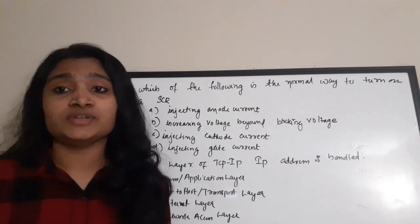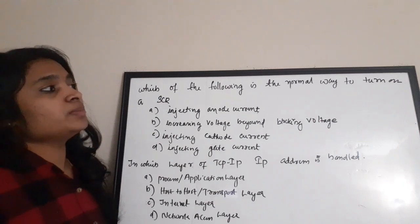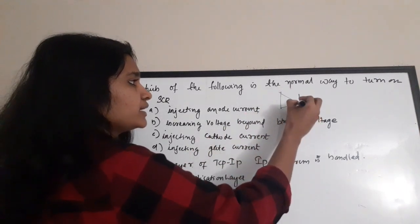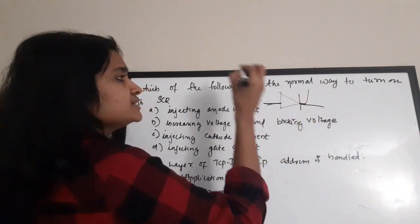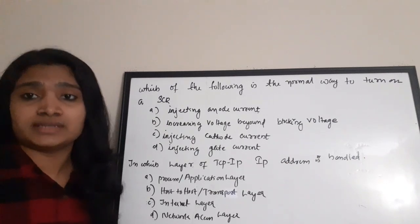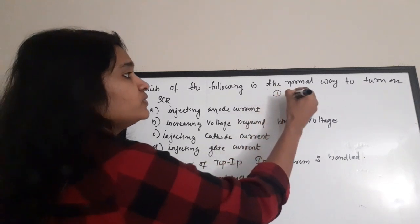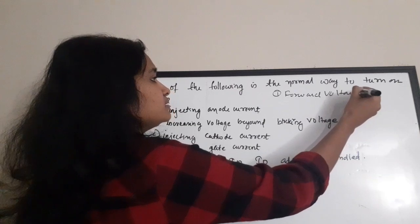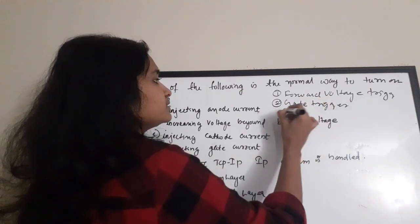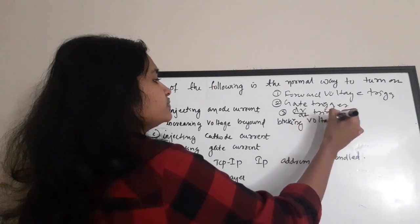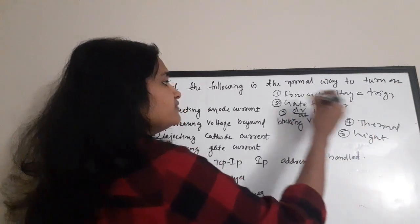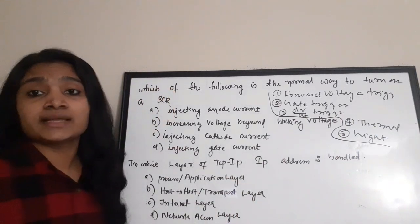Next question: which is the normal way to turn on an SCR (Silicon Control Rectifier)? The SCR has three terminals: anode, cathode, and gate. There are various ways to turn on an SCR: 1) Forward voltage triggering, 2) Gate triggering, 3) dv/dt triggering, 4) Thermal triggering, and 5) Light triggering.